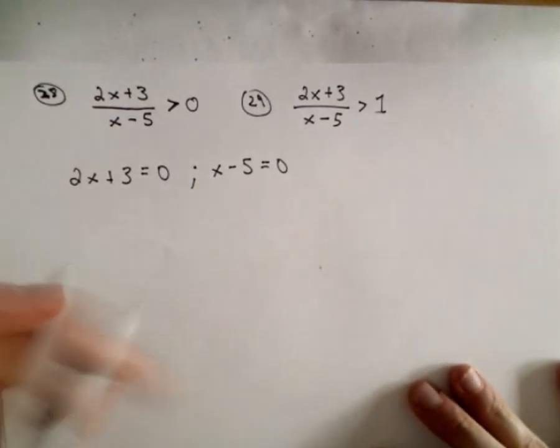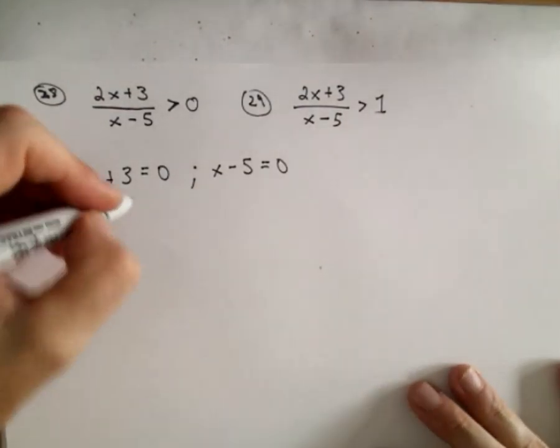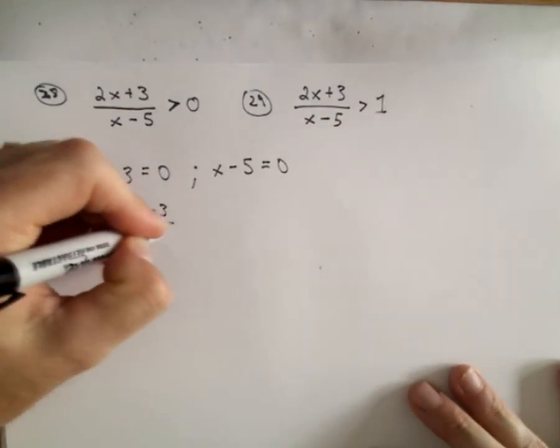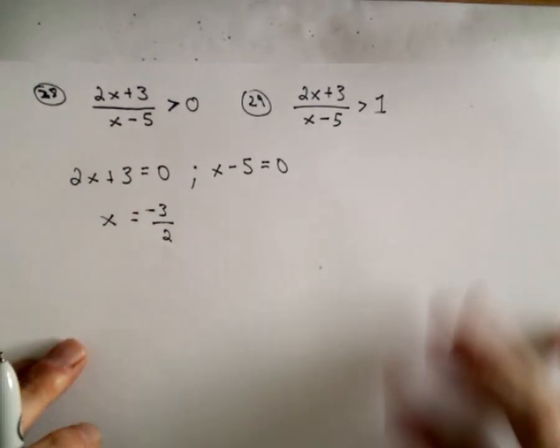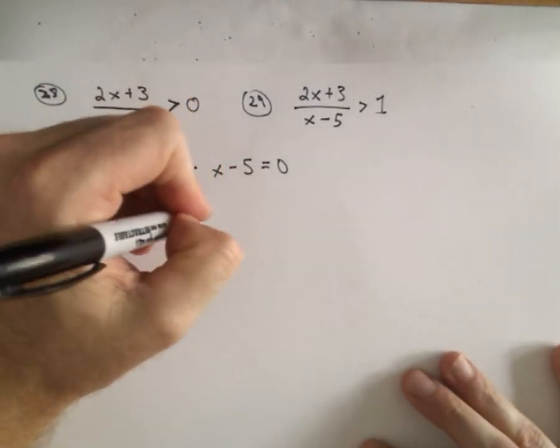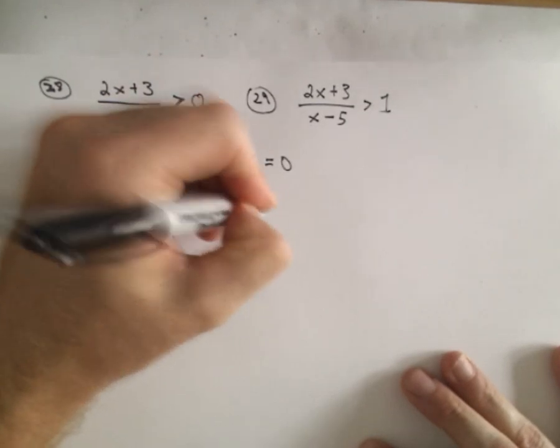And we solve those two equations. So for the first one, we could subtract 3 and then divide by 2. We would have x equals negative 3 halves. And for the second one, if we just add 5, we'll get x equals 5.